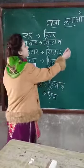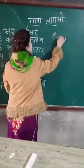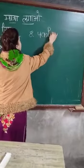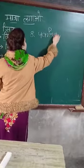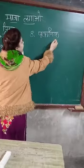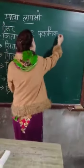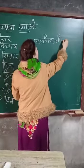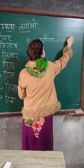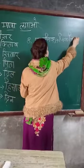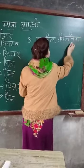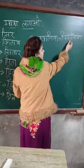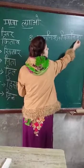Now our eighth word is Pa, ta, na, ko chhoti ee, ka — patnik. Now it will change into picnic. Are we going to write out picnic? P-I-C-N-I-C picnic.